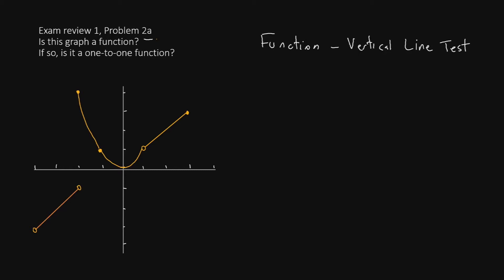If we look at this picture, the only place where a vertical line could potentially cross more than once is along this dotted line where it looks like the pieces overlap. However, if we look to the upper part of the function, we have a closed circle, and on the lower part of the function, we have an open circle. The most important thing to realize is that open circles don't count. So even though it appears this vertical line crosses the function twice, we don't count the open circle toward that total, but we do count the closed circle.